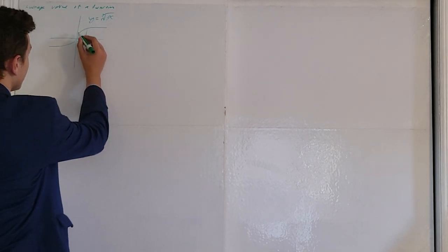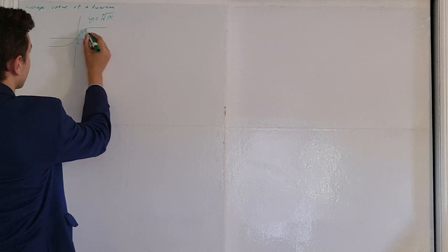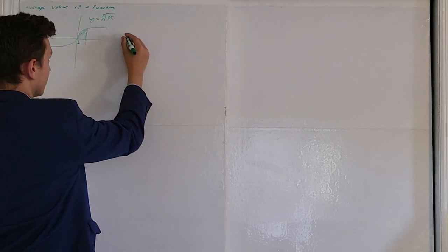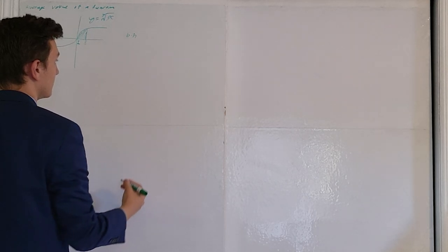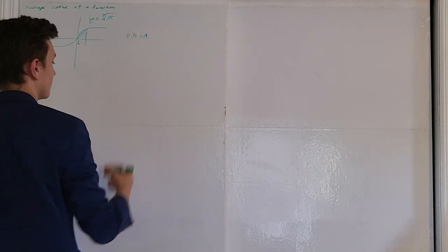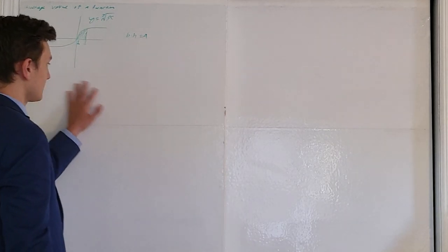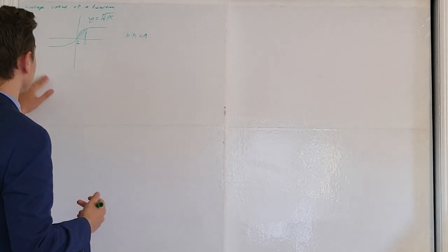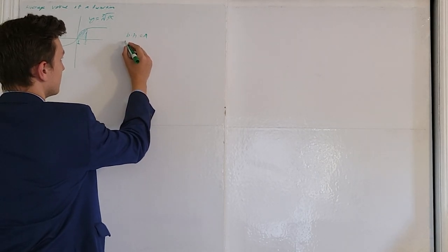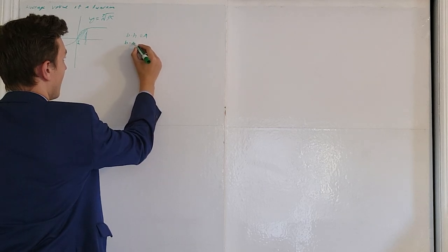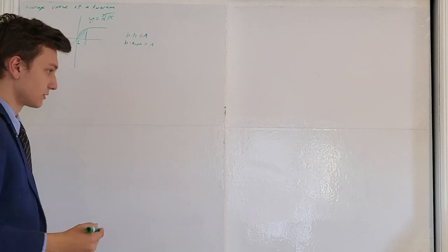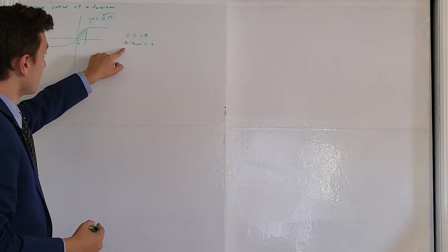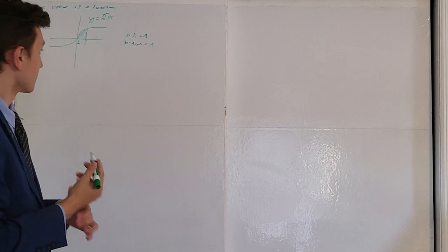If you look at the region right here, this creates an area. An area can always be calculated in the form base times height equals area. That's easy when you have a convenient shape like a square or rectangle, but here the same formula still holds true: base times average height equals area.